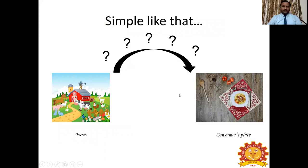First of all, a producer can be called as a farmer. The ultimate aim for the farmer is to produce the agricultural commodity. Once after he harvests any agricultural commodity, the ultimate aim for this producer is to sell this product to the market. On the other side, there are consumers who are waiting to buy products from the market. These producers are on the left-hand side of a marketing channel and the consumers are on the extreme right-hand side of the marketing channel.